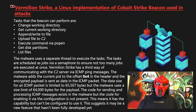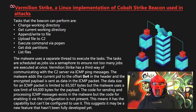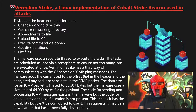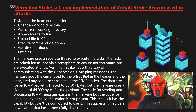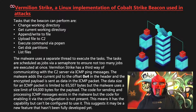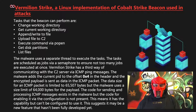Vermillion Strike has a third way of communicating with the command and control server via ICMP ping messages. The malware adds the current PID to offset 0x4 in the header, and the encrypted payload is sent as data in the ICMP packet. The data size for an ICMP packet is limited to 65,507 bytes, but the malware uses a size limit of 64,000 bytes for the payload. The code for sending and processing ICMP messages exists in the malware, but the code for enabling it via configuration is not present — meaning it has the capability but can't be configured to use it yet, suggesting it may be a new feature still in development.